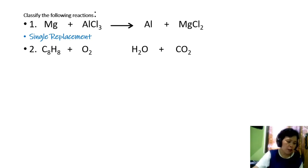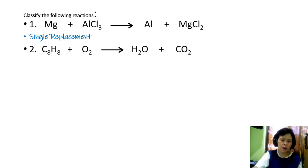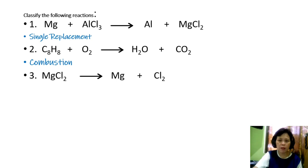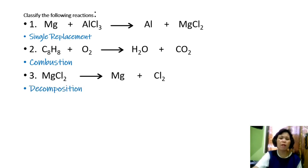Second: the chemical formula for octane reacts with oxygen gas giving water and carbon dioxide. You have carbon and hydrogen reacting with oxygen gas — that means there is burning, so this is a combustion reaction. Third: magnesium chloride breaks down into magnesium and chlorine gas. A complex compound breaking down into its elements — this is decomposition.